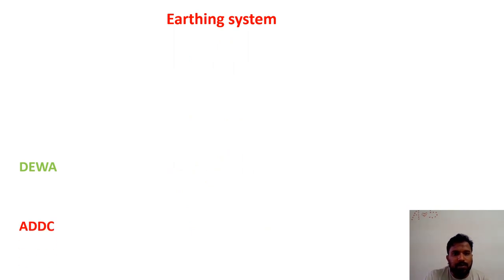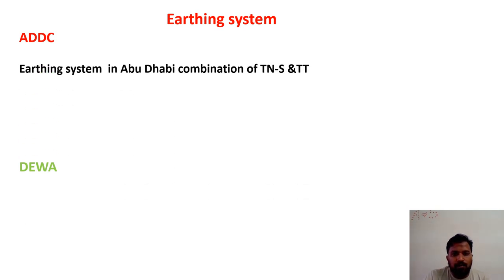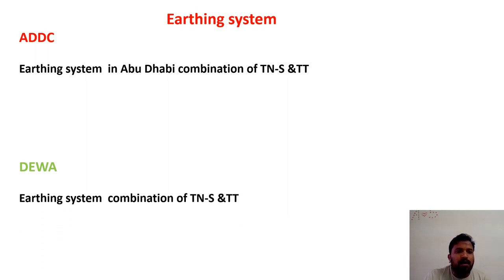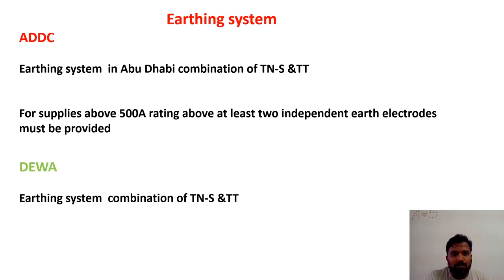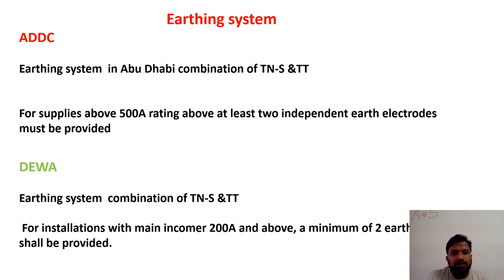Now we will see the earthing system differences between ADDC and DEWA. For ADDC, we use TNS and TT earthing systems — for more details on what TNS, TT, and IT systems are, refer to the separate video on earthing classification. DEWA also uses TNS and TT systems. For ADDC, if the incomer is more than 500 amperes, two independent electrodes must be provided, whereas for DEWA, if it is more than 200 amperes, two earth electrodes are required.